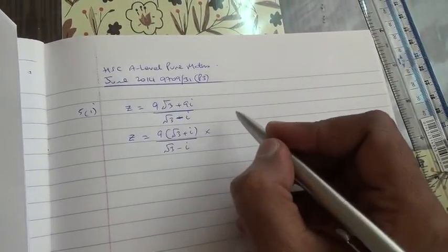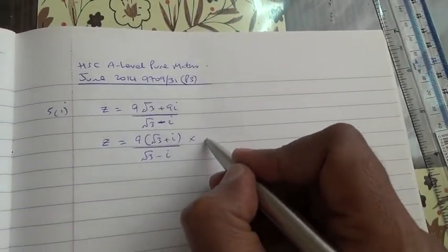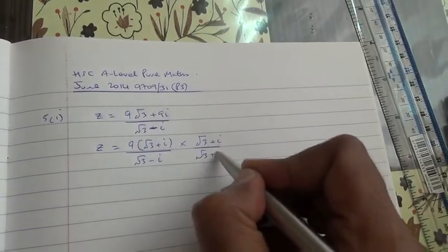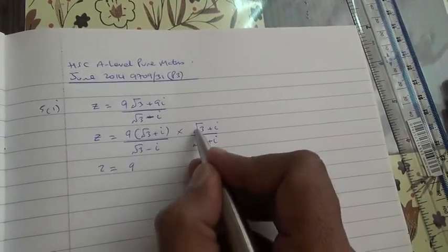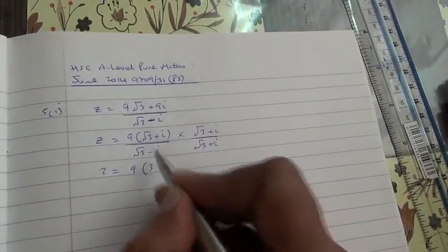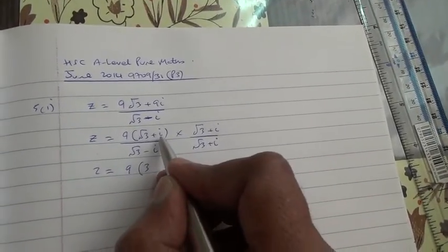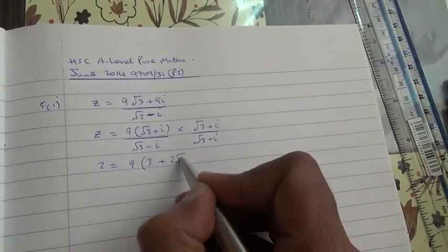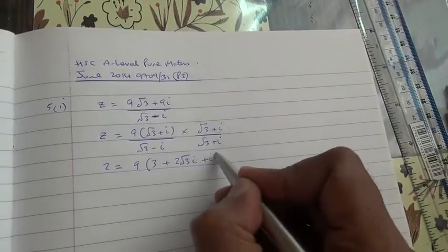Multiplied by the conjugate of the denominator, which is then √3 plus i over √3 plus i. So, 9, √3 times √3 is 3, √3 times i is √3i, i times √3 is √3i. Plus these two, you get 2√3i, i times i is plus i².